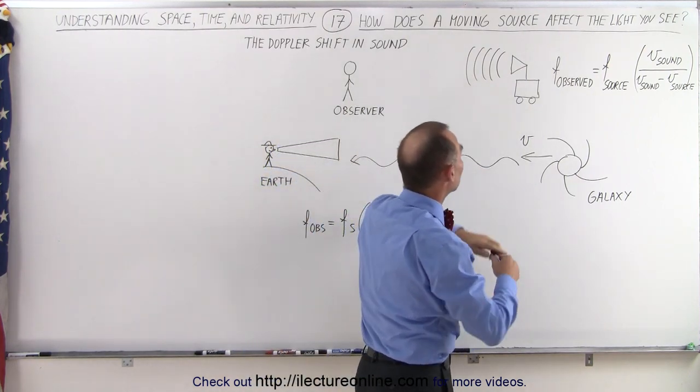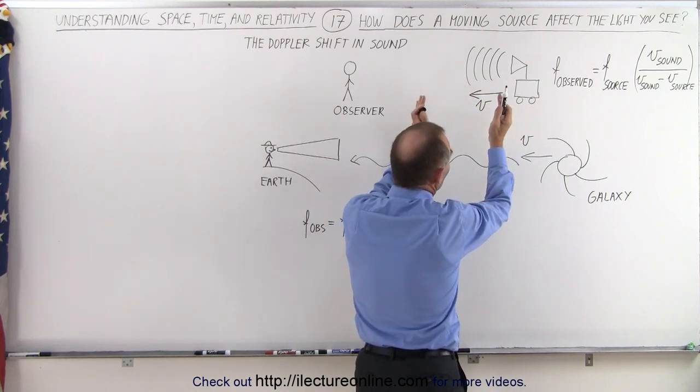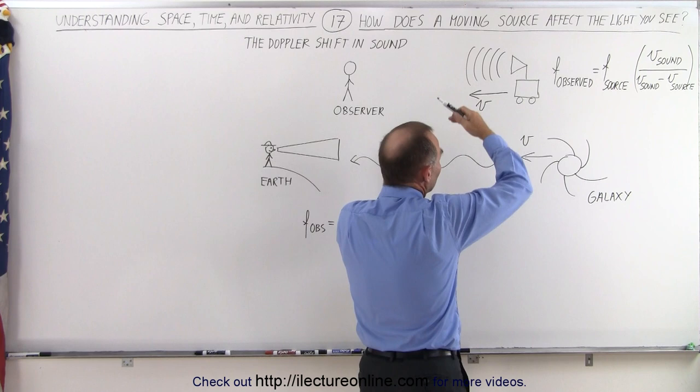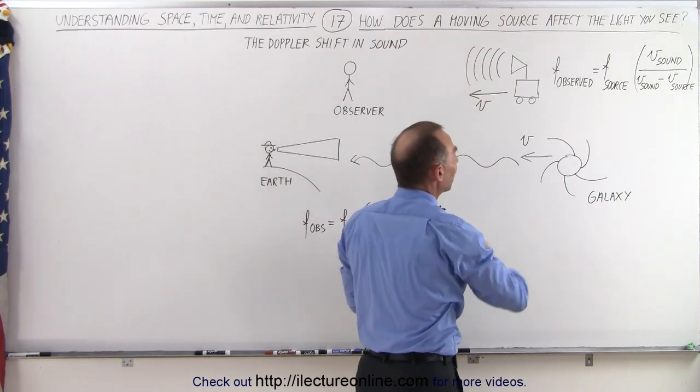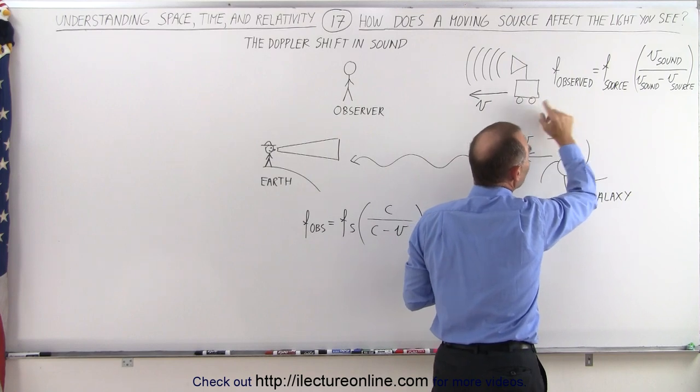We have a sound source that is moving towards the observer, and because of that the waves are bunched close together causing the frequency to increase. The frequency observed is equal to the frequency of the source times the equation of the velocity of the sound in air divided by the velocity of the sound minus the velocity of the source.